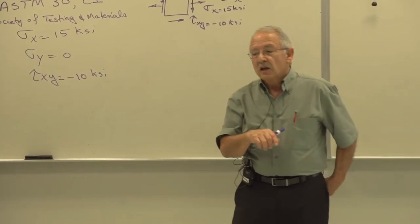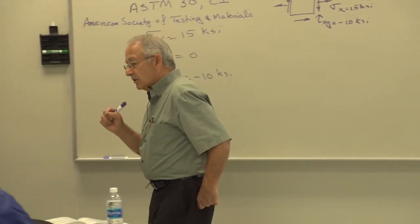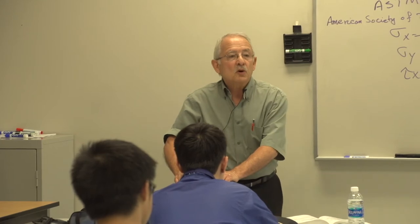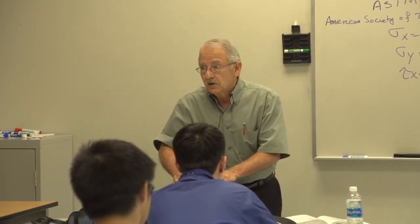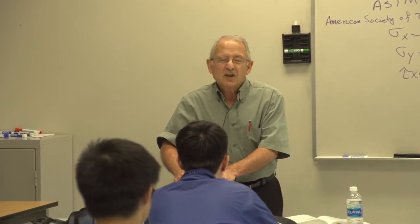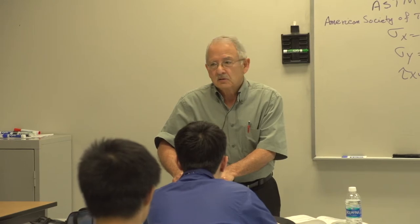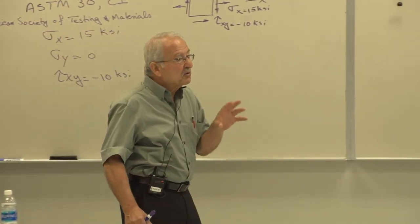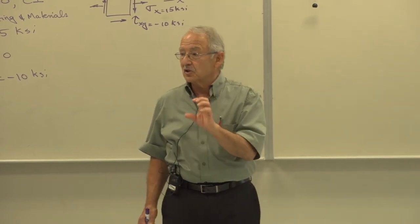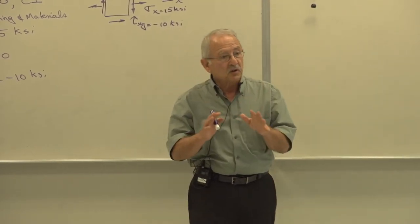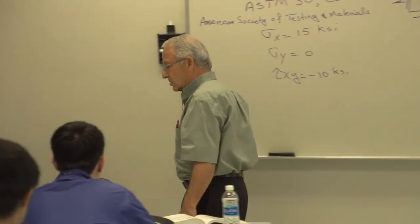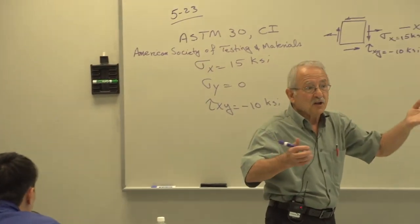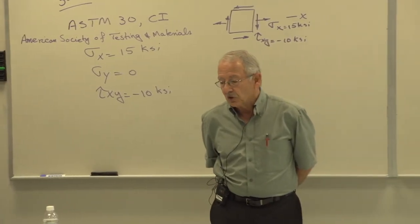If you get a steel with 2.1% carbon, it is definitely worthless — it is so brittle you can't use it for anything. Practically, no more than 1.2 to 1.3% carbon can exist in steels, and those steels are very brittle as well, though there are some applications for them. So we can't have 30 for carbon in any type of steel or iron alloy.